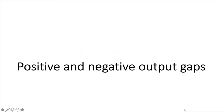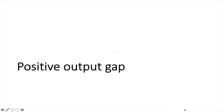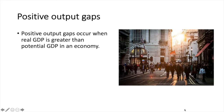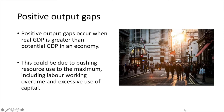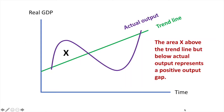So what are positive and negative output gaps exactly? Positive output gaps occur when real GDP is greater than potential GDP in an economy. This could be due to pushing resource use to the maximum, including labour, working overtime and excessive use of capital. Area X represents a positive output gap in a trade cycle diagram.